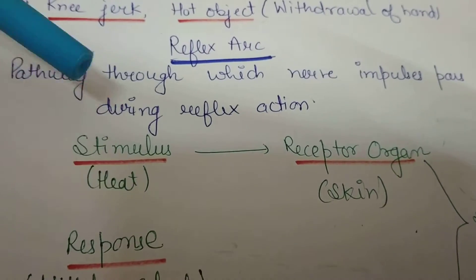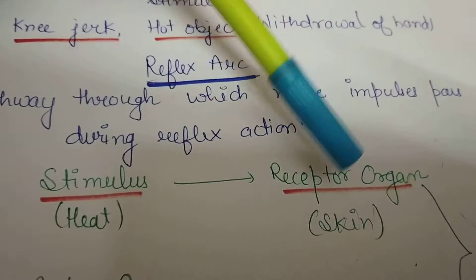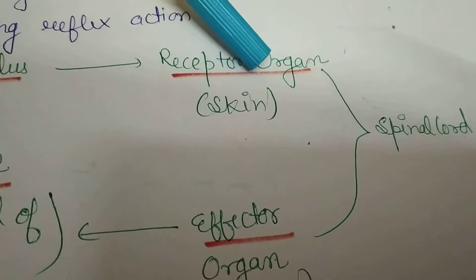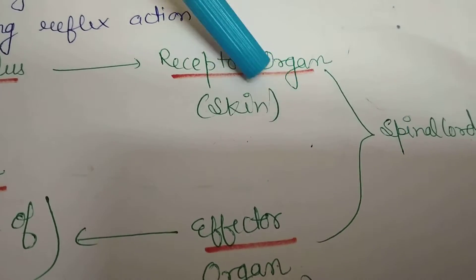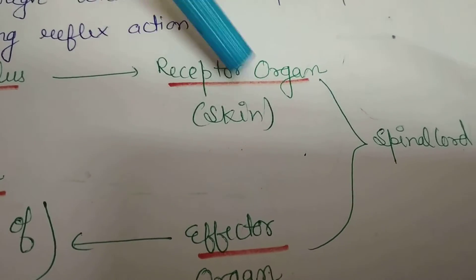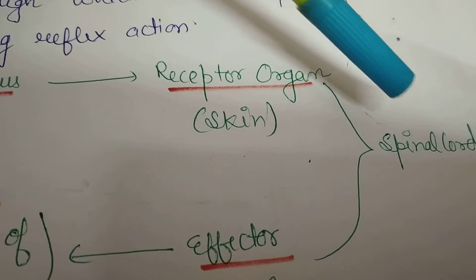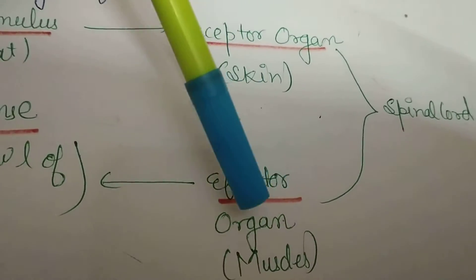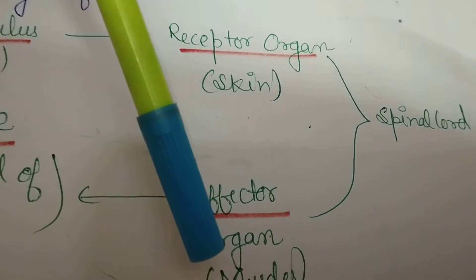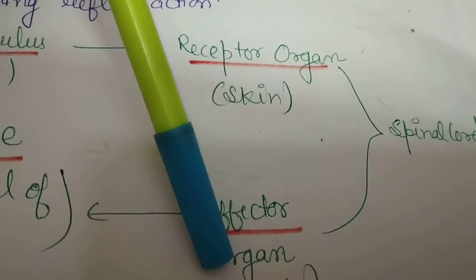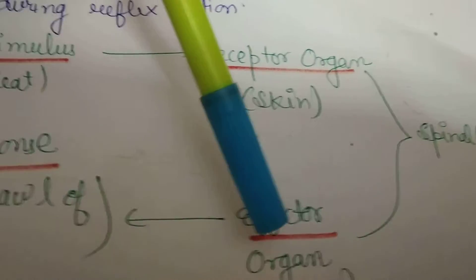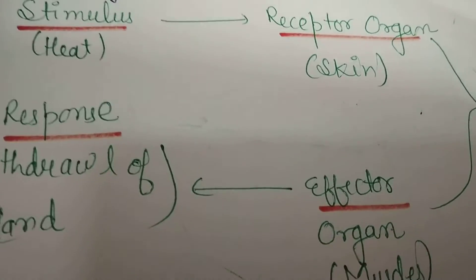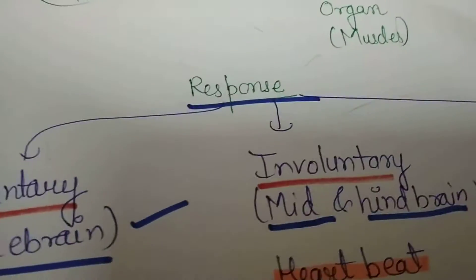For example: stimulus — touching a hot cup of tea. The receptors in the skin (receptor and sense organ) send the signal via neurons to the spinal cord. From the spinal cord, the signal reaches the effector organ — the muscles of the hand — giving the response to withdraw the hand.